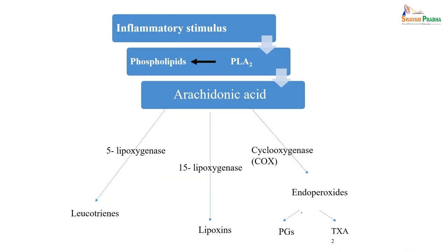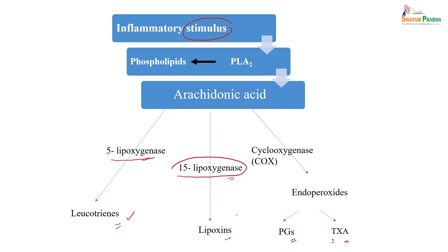Let us see the pathway. Starting from an inflammatory stimulus, phospholipid is converted to arachidonic acid via phospholipase A2. From arachidonic acid, via 5-lipoxygenase, leukotrienes are ultimately formed. From 15-lipoxygenase, lipoxins are formed. From cyclooxygenase (COX), endoperoxides, prostaglandins, and thromboxane A2 are formed. So the enzymes mediating through the arachidonic acid pathway are lipoxygenase forming leukotrienes, 15-lipoxygenase forming lipoxins, and cyclooxygenase — COX-1, COX-2, and COX-3 — forming prostaglandins and thromboxane.